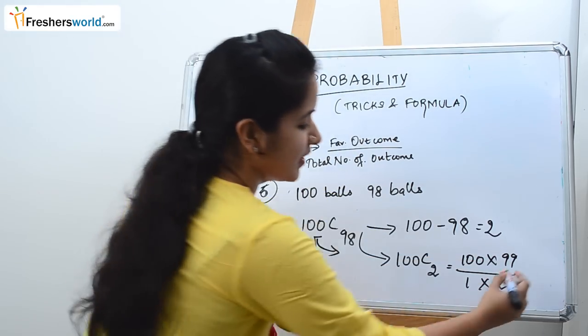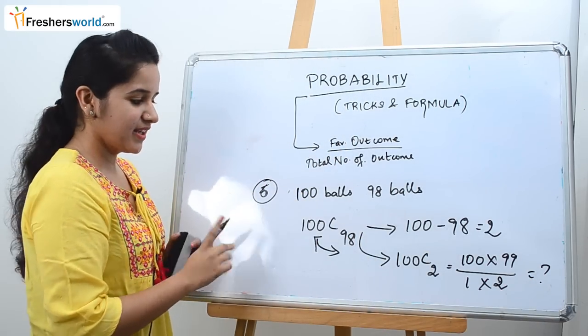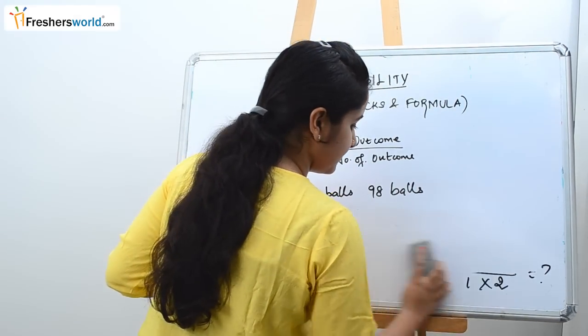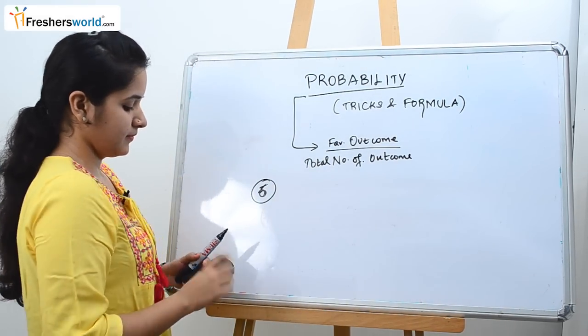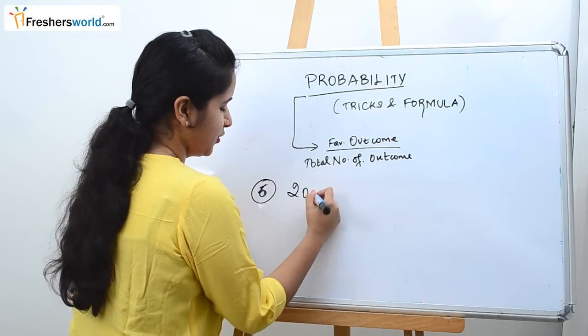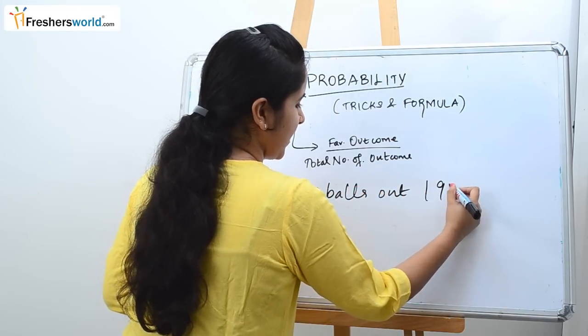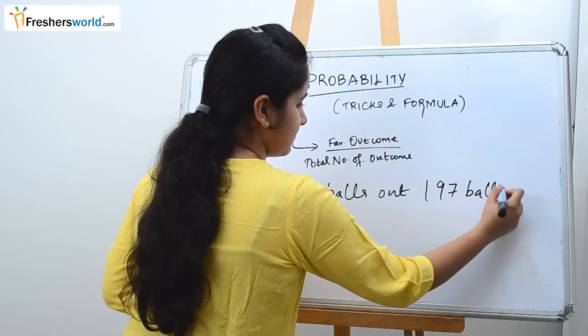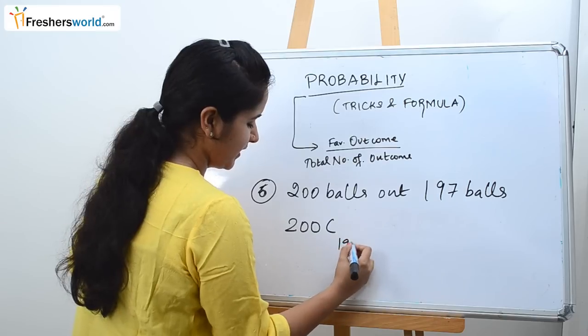The value that we get here is same as that for this. Let's take another example. Let's take we are having 200 balls out of which we need to choose 197 balls. So as usual we will write 200C197.